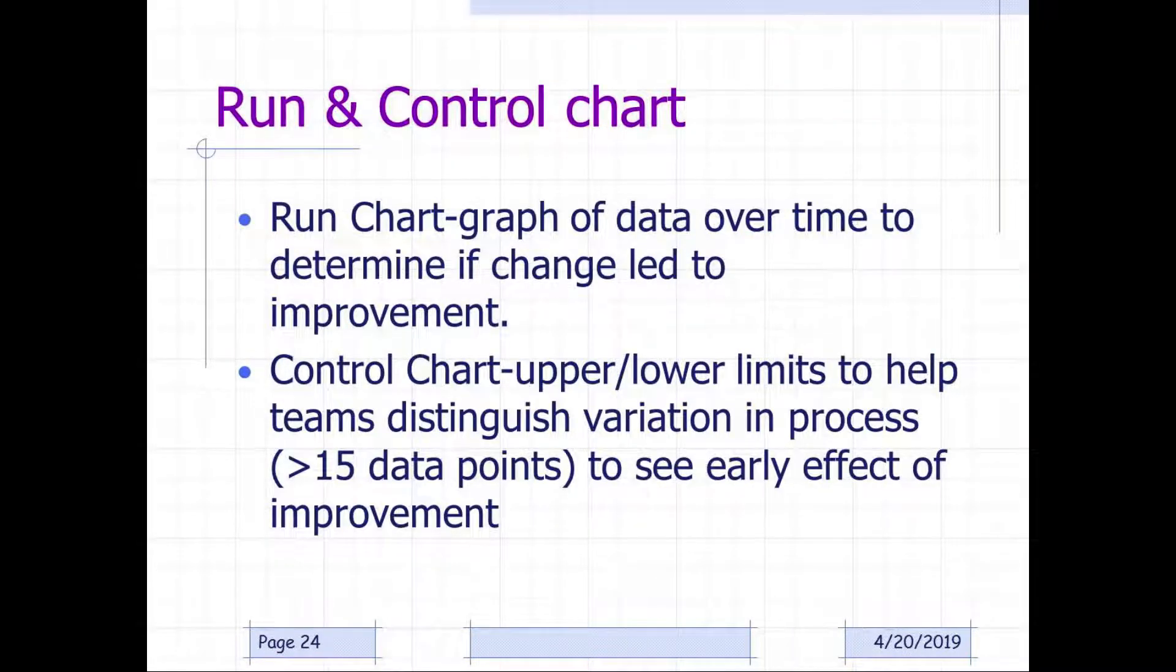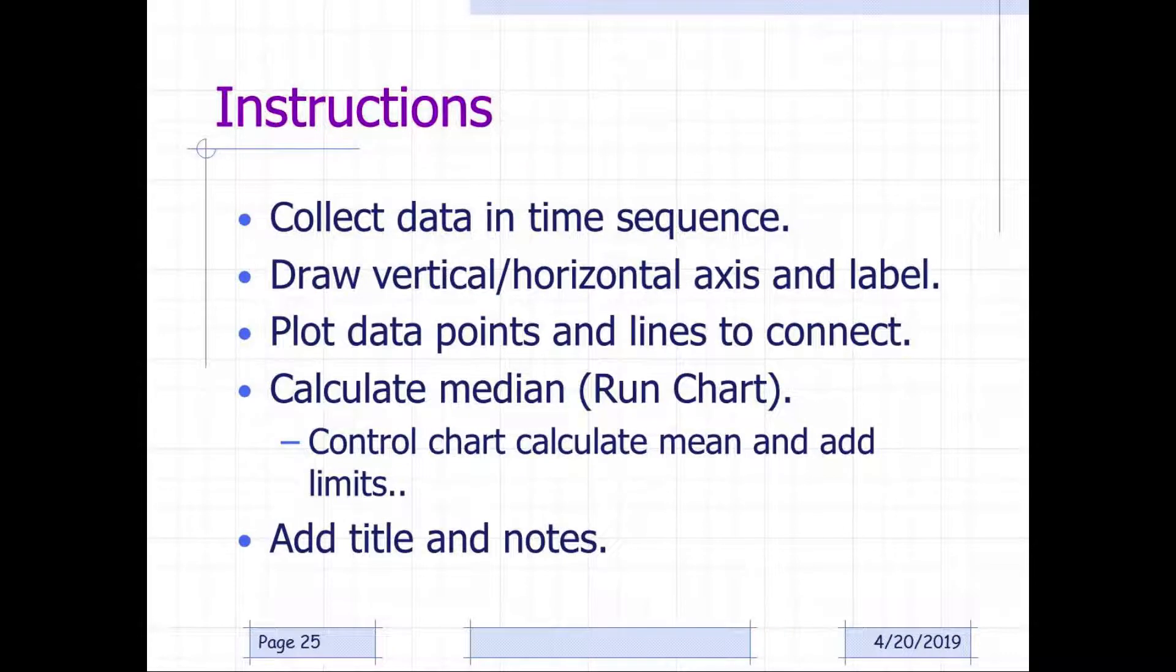Run chart graphs are of data over time to determine if change led to improvement. Control chart upper-lower limits help teams distinguish variation in the process to see early effects of improvement. You collect data in time sequence, and you draw vertical and horizontal axis and label. You plot the data points and lines to connect, and you calculate the median or mean on the run chart. Control charts calculate mean and add limits, and then you add a title and the notes.